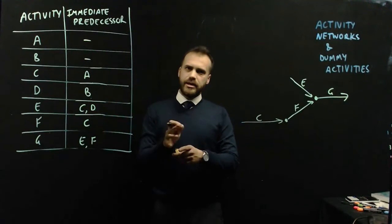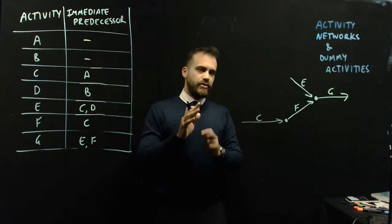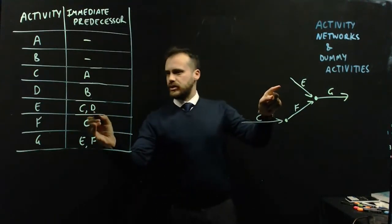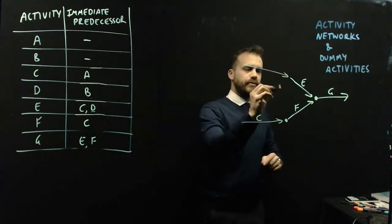E has immediate predecessors of C and D. And this is where the problem starts. Let's just deal with D for a second. E has an immediate predecessor of D, right?